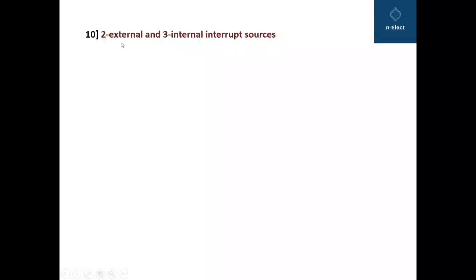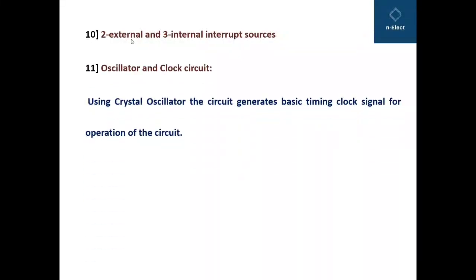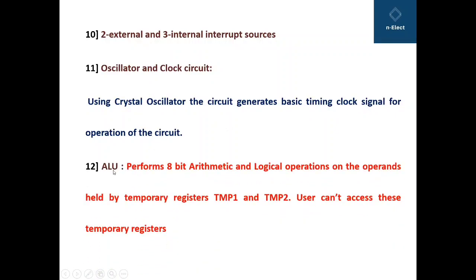There are two external and three internal interrupt sources in 8051. Oscillator and clock circuit using crystal oscillator the circuit generates basic timing clock signal for the operation of the circuit. And last but not the least is ALU that is arithmetic logic unit which performs 8-bit arithmetic and logical operations on the operands that is data held by the temporary registers TMP1 and TMP2 and user cannot access these temporary registers.